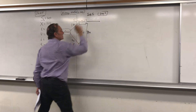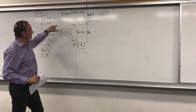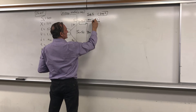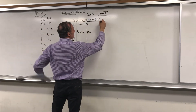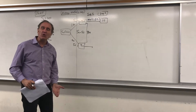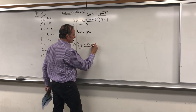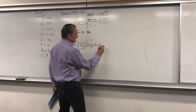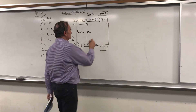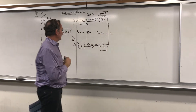Step 2: determine the call option payoffs at each node. If the stock goes to $120, you exercise because 120 > 110, so the payoff CU = SU minus X = 120 minus 110 = $10. If it goes to $90, you let it expire because 90 < 110, so the payoff CD = max(0, SD minus X) = $0. The range of call payoffs is CU minus CD = 10 minus 0 = $10.